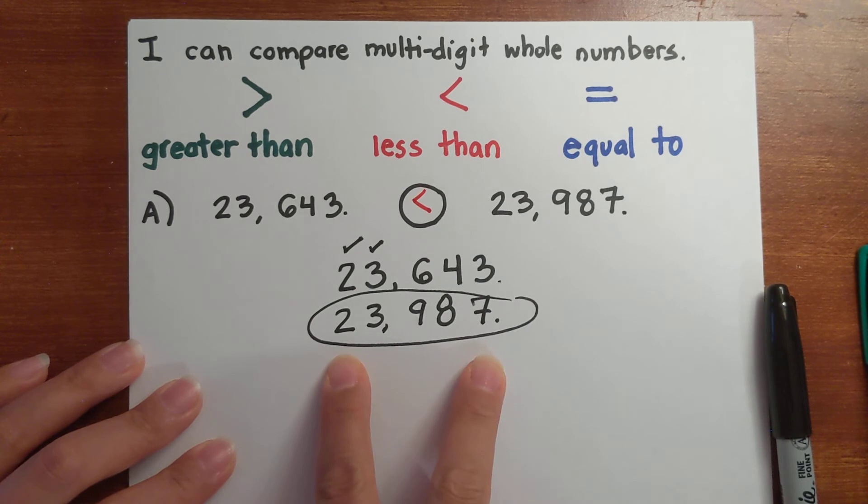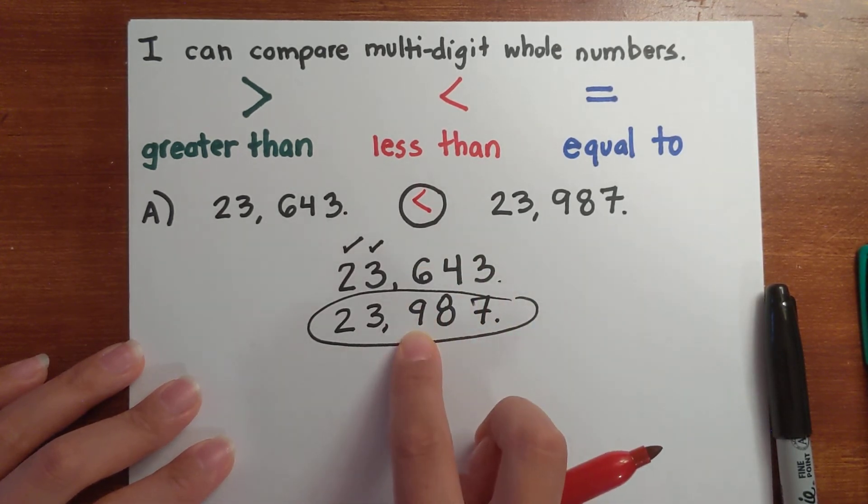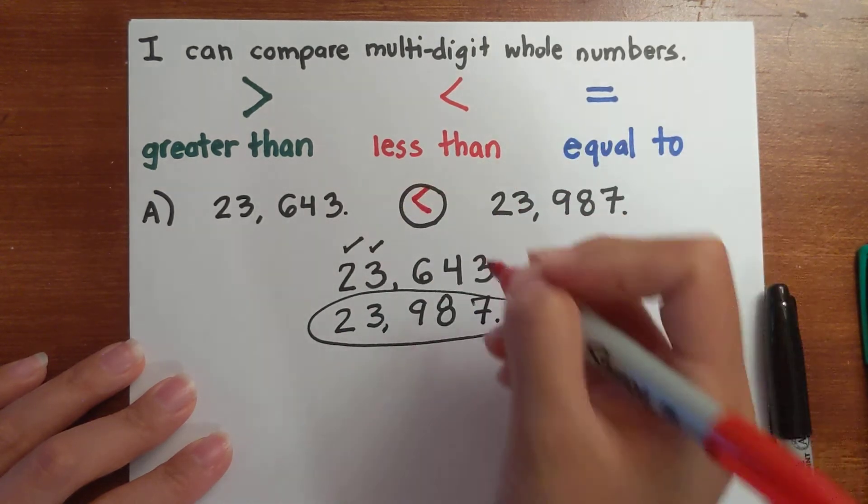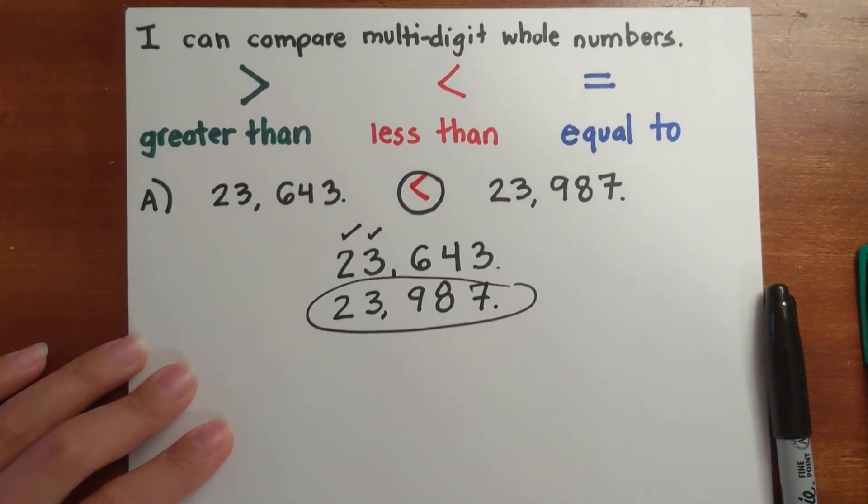So line up your values, making sure that they're in the correct place values to compare, and then find your symbol that matches your answer. Let's do one more, let's do B.